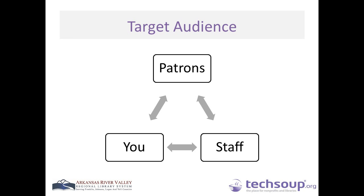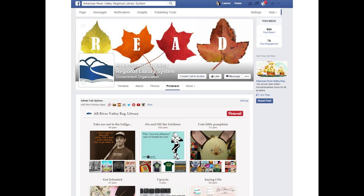Something else you can do with Pinterest is house it on your Facebook page through an app called Woobox. This is a way to cross-promote what you have. On Woobox, you can also add other platforms like Twitter, Instagram, and your YouTube channel, linking people over to your other social media sites. We used the free version, so we're limited on what we can do, but if you want to invest more, you can add more social media aspects into Facebook itself.